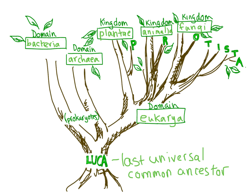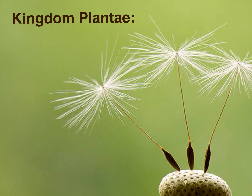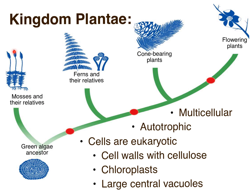Now let's get into the more well-known branches, starting with Plantae. Plants make up the vast majority of biomass on land. And unlike their algal ancestors, they have evolved very well to grow in this environment. Whether a moss, a fern, a cone-bearing plant, or a flowering plant, all plants share some characteristics. They are all multicellular. They are all autotrophic — that is, they photosynthesize.